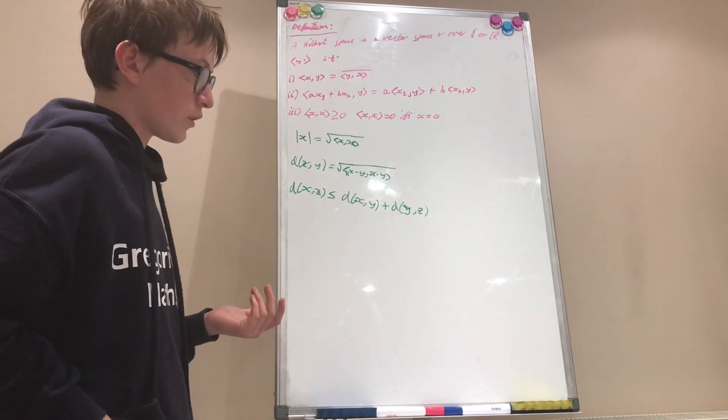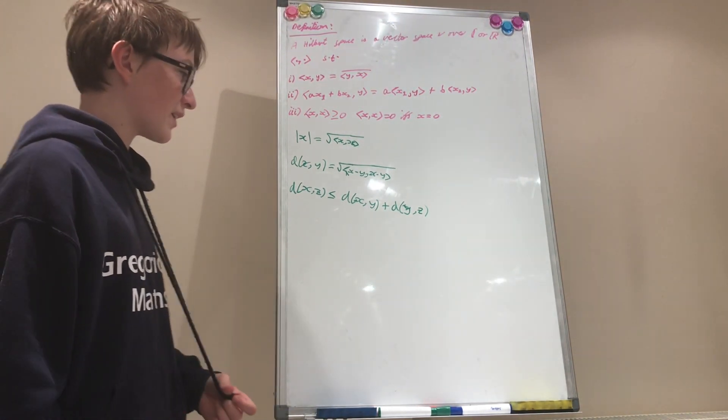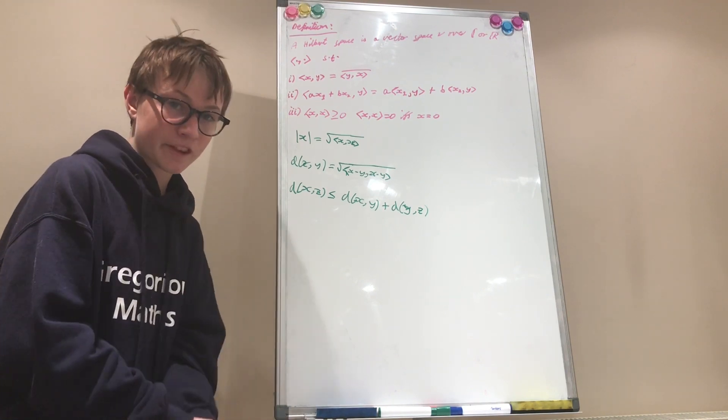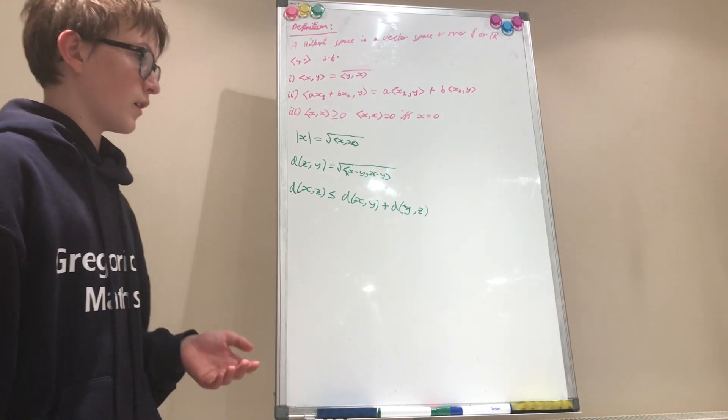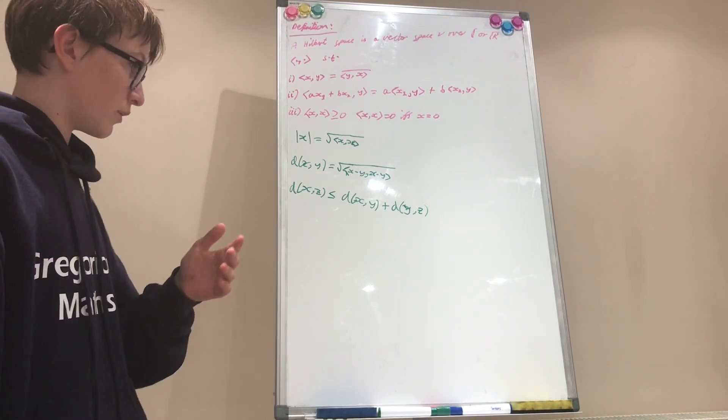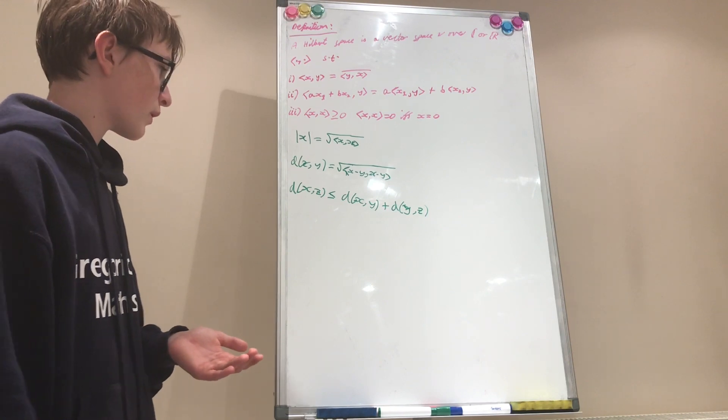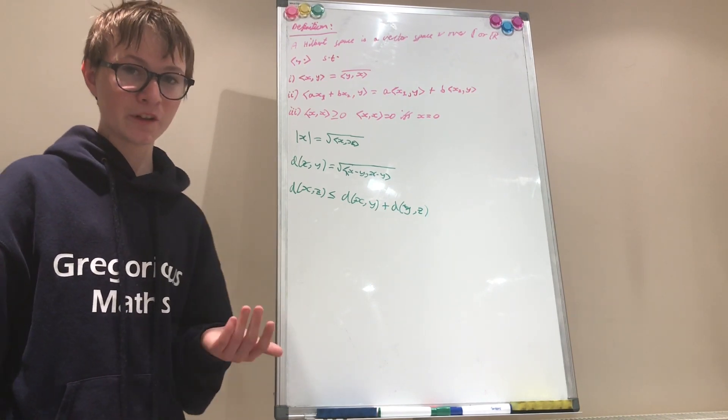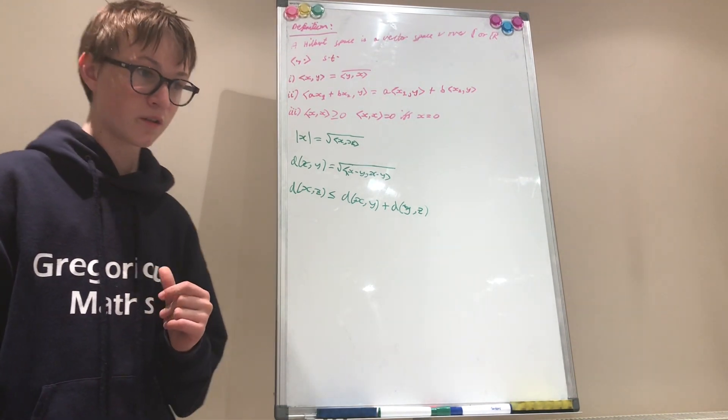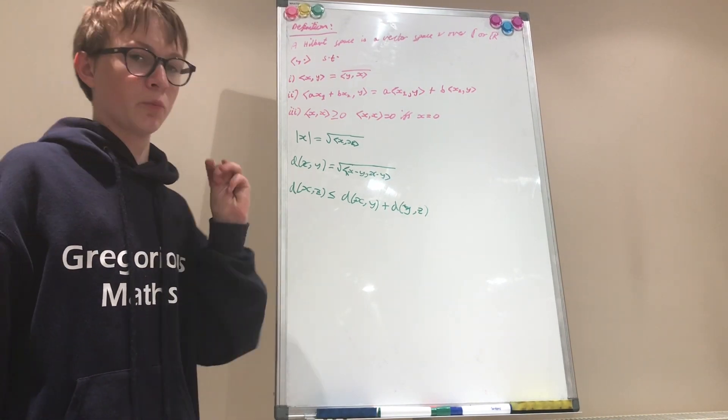Alright, so one of the applications of this in quantum mechanics is that when it was being mathematically developed rigorously, the possible states or the pure states of a quantum mechanical system are represented by unit vectors in a complex separable Hilbert space. And in the next video we're going to be looking at bra-ket notation or ket vectors, and you'll see why I introduced the notion of a Hilbert space first. Goodbye!